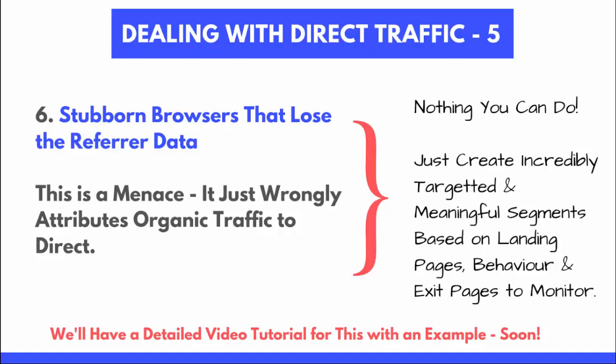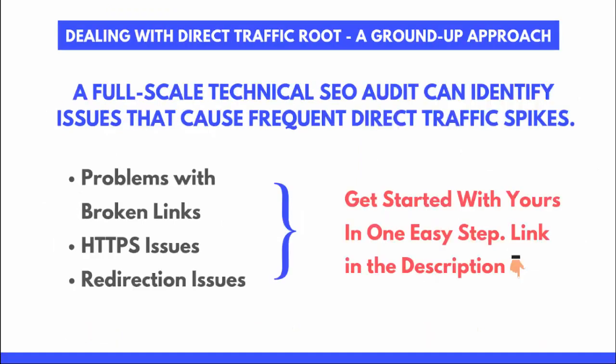Finally, there are stubborn browsers that lose referral data — really annoying because it shows up as incorrect and is honestly a pain to fix. We'll have a detailed video tutorial for this soon to help people redirect their traffic and show inside GA where it should be coming from. It's really difficult to fix, and essentially there's not much you can do — it comes back to segments, landing pages, and using UTMs as the most important approach. A full-scale technical SEO audit can identify the issues causing frequent direct traffic spikes: broken links, HTTPS issues, and redirection problems.